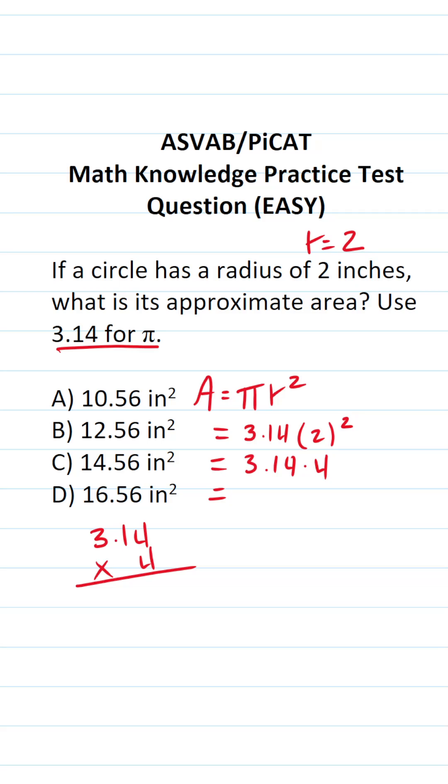To do this math, we're going to take the decimal in 3.14 and shift it two times to the right to make this 314 times 4, albeit with two decimals to move back into my answer when I'm done. 4 times 4 is going to be 16, carry a 1. 1 times 4 is 4 plus 1 is going to be 5. 4 times 3 is 12.